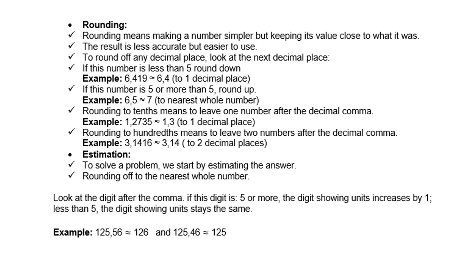Rounding to hundredths means to leave 2 numbers after the decimal comma. Example, 3,1416. Now the 1 after the 4 is under 5, so we round down.